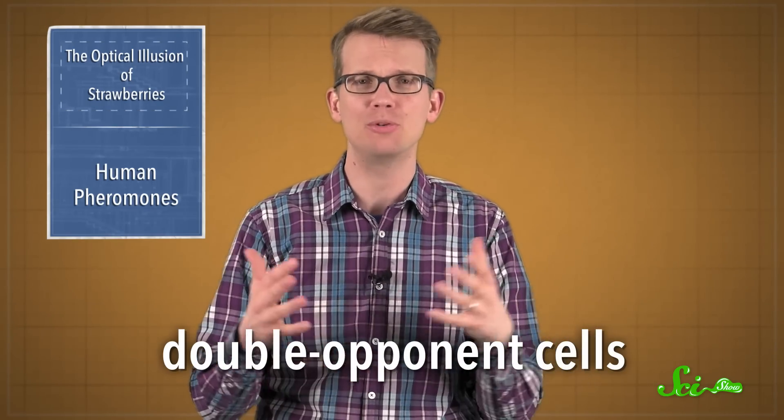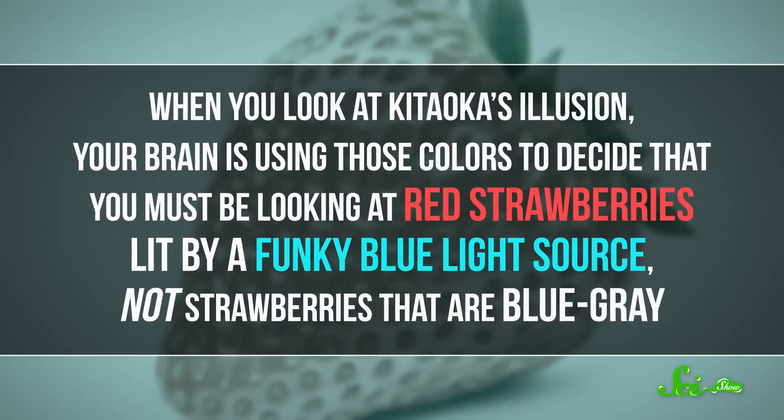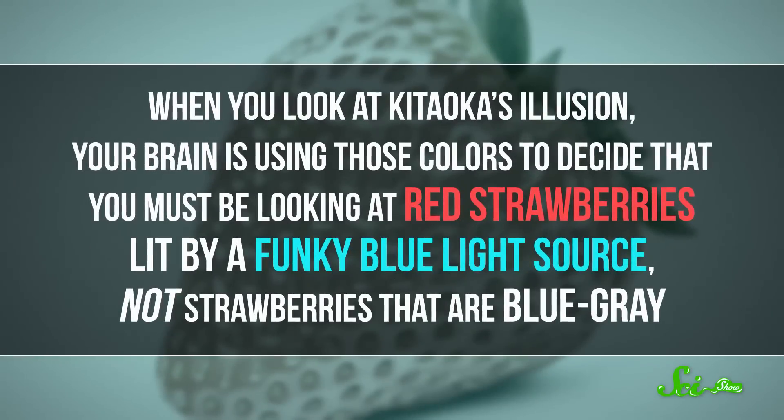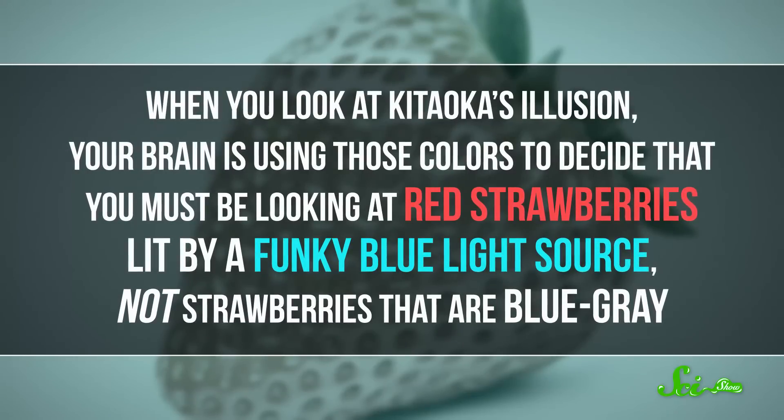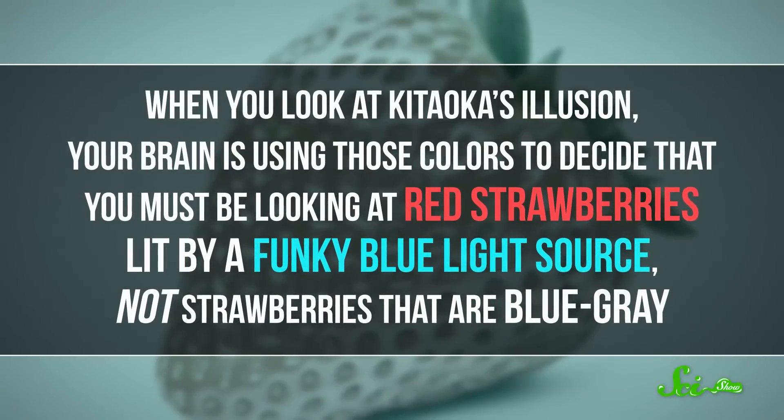which detect patterns and boundaries between colors. When you look at Kitaoka's illusion, your brain is using those colors to decide that you must be looking at red strawberries lit by a funky blue light source, not strawberries that are blue-gray.